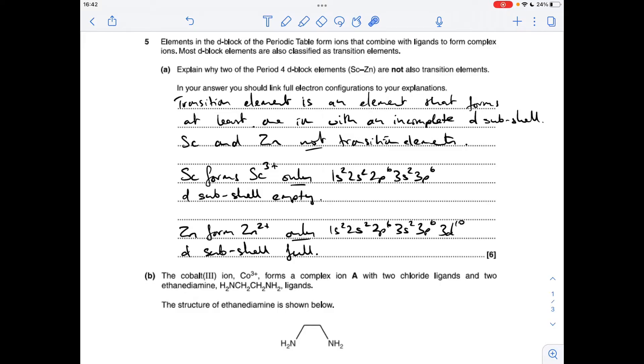Scandium and zinc are the two elements in the period that aren't transition elements. Scandium will only form the three plus ion. There's its electron configuration—you'll see it hasn't even got any D electrons, so the D subshell is empty.